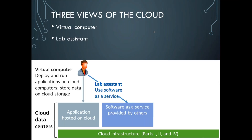The second model of cloud computing is what you might call a lab assistant — a set of software services that does things we could do ourselves locally, but is perhaps more efficient to do remotely. We all make use of the software-as-a-service side of cloud computing every day if we use Google Docs, Google Mail, or some travel planning service. There are also a growing number of more scientific software-as-a-service offerings available.